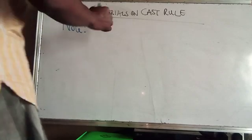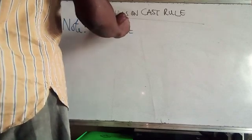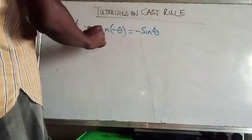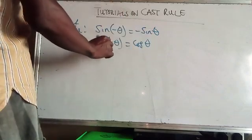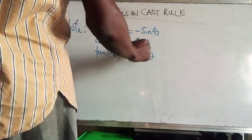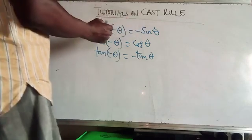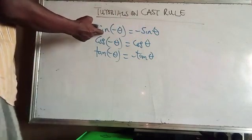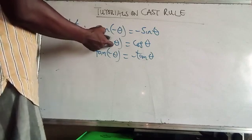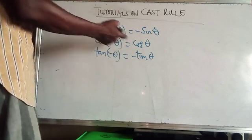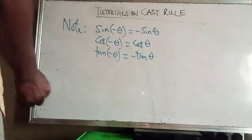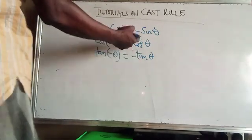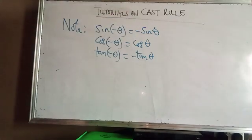Sine minus theta is equal to minus sine theta. Cos minus theta equals cos theta. And tan minus theta equals minus tan theta. Sine theta is an odd function, while cos theta is an even function — that's why cosine has a positive sign. Since sine is an odd function, you have a negative sign. Likewise, tan theta also has a negative sign, because tan theta equals sin theta over cos theta, so multiplying minus by plus gives minus.